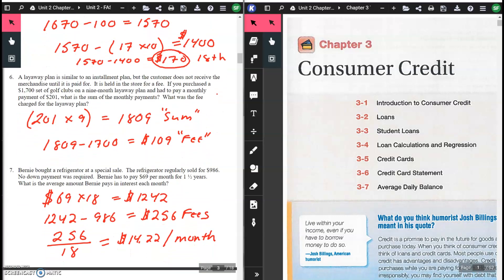A layaway plan is similar to an installment plan, but the customer does not receive the merchandise until it was paid for. It is held in the store for a fee. If you purchased a $1,700 set of golf clubs on a nine-month layaway plan and had to pay a monthly payment of $201, what is the sum of the monthly payments? We have $201 per month times nine months, that's what it said in the problem. Gives you $1,809. That's the sum, that's how much we owe.